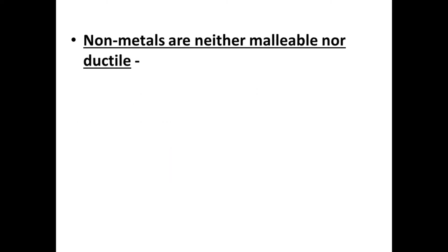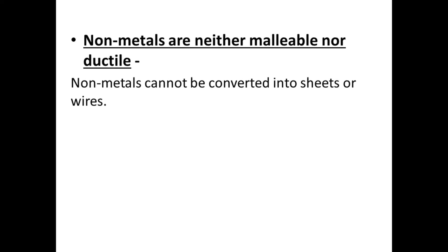Next property: non-metals are neither malleable nor ductile. Non-metals cannot be converted into sheets — that property is malleability — nor can they be converted into wires — that is ductility. So non-metals have neither malleability nor ductility.